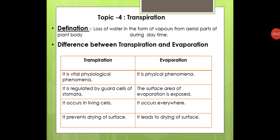Good morning friends. Today we are going to study a core topic from plant physiology, that is transpiration. This process of transpiration is a very important physiological phenomenon in the life of plants. Transpiration is defined as the loss of water in the form of vapors from the aerial parts of the plant body during the daytime.